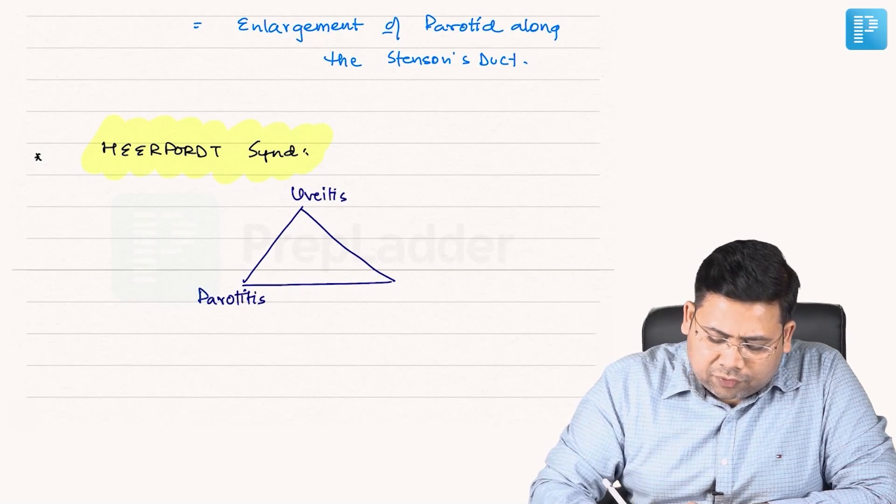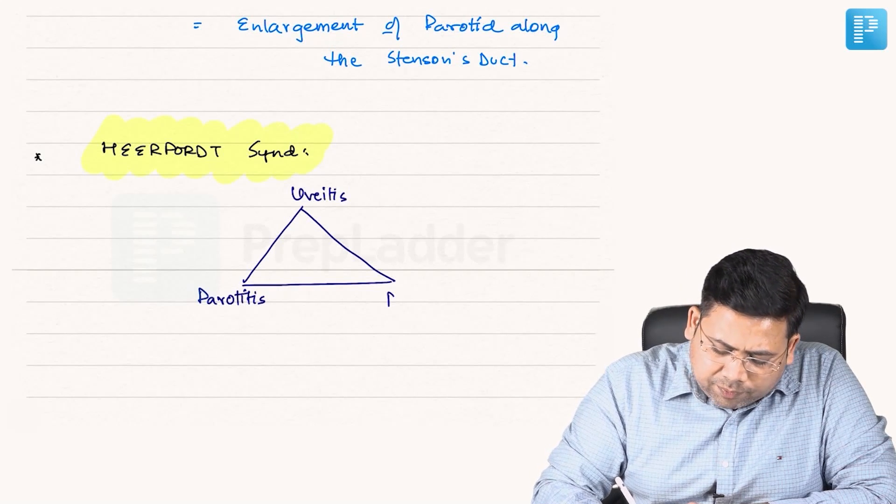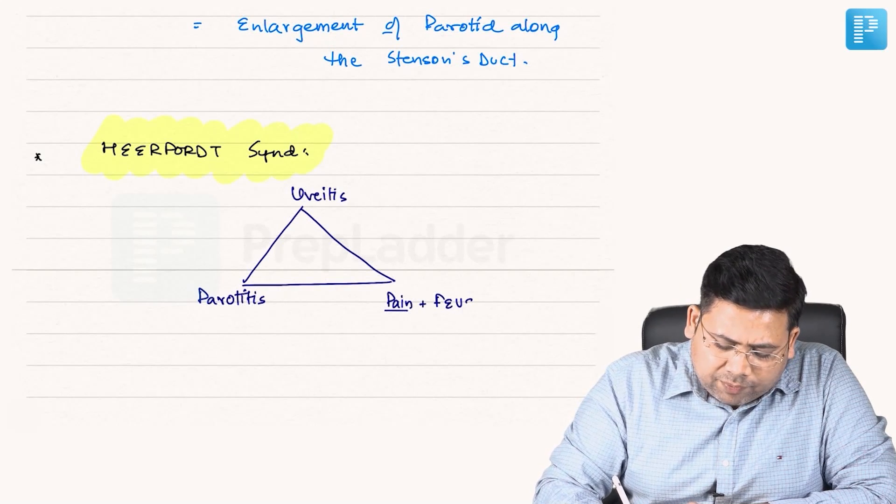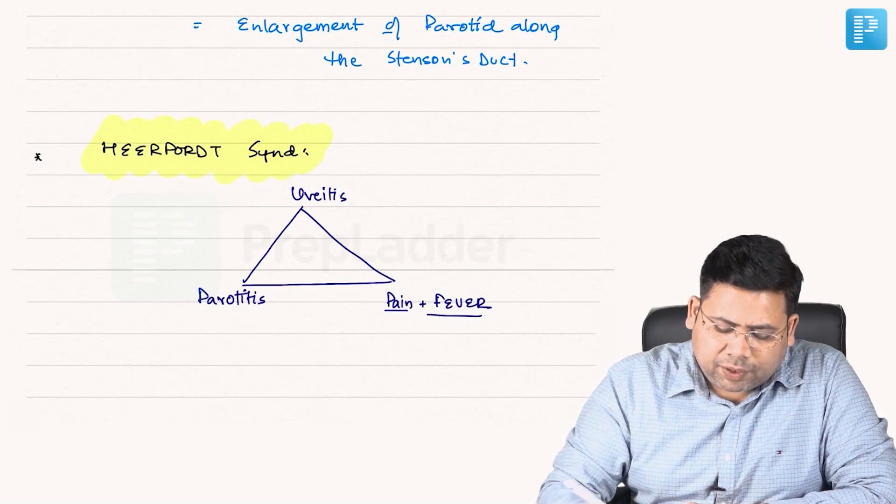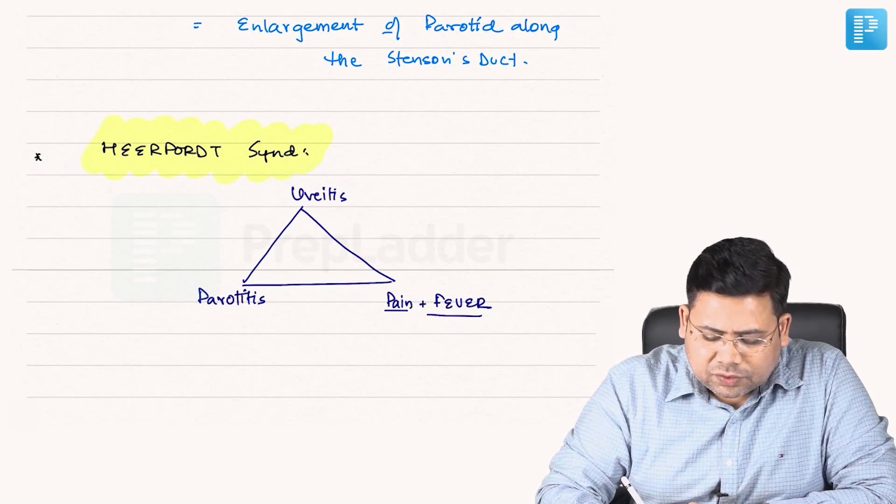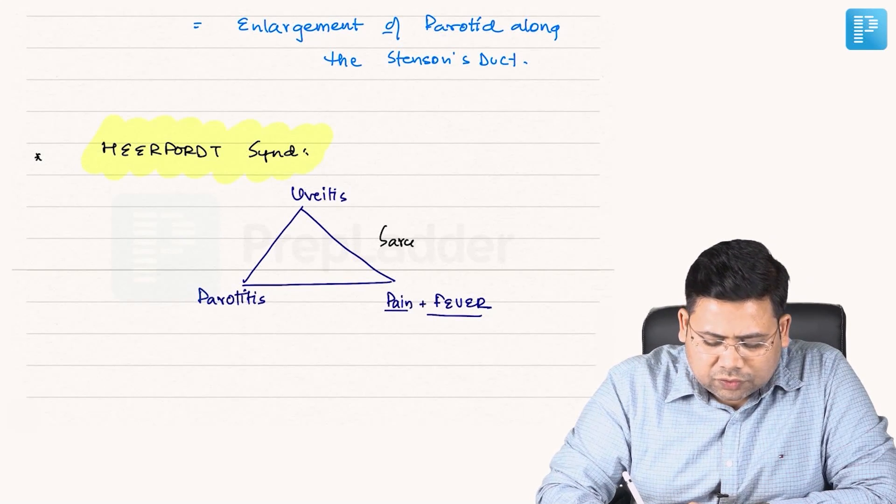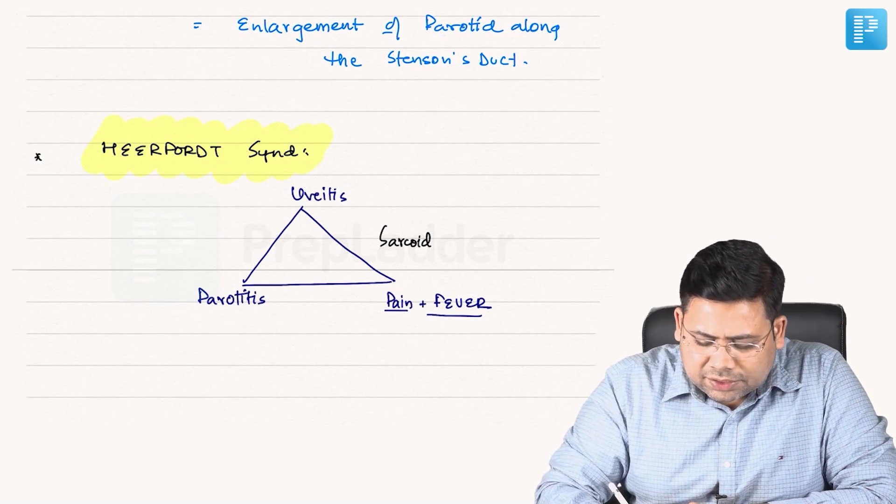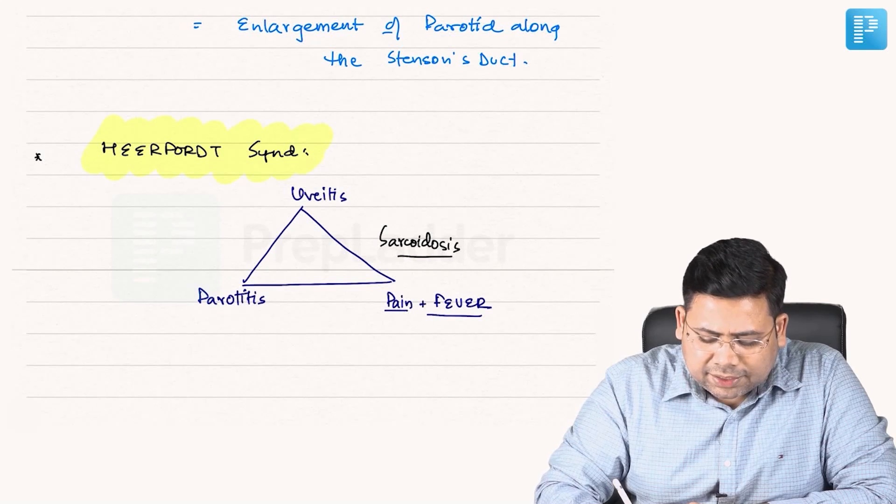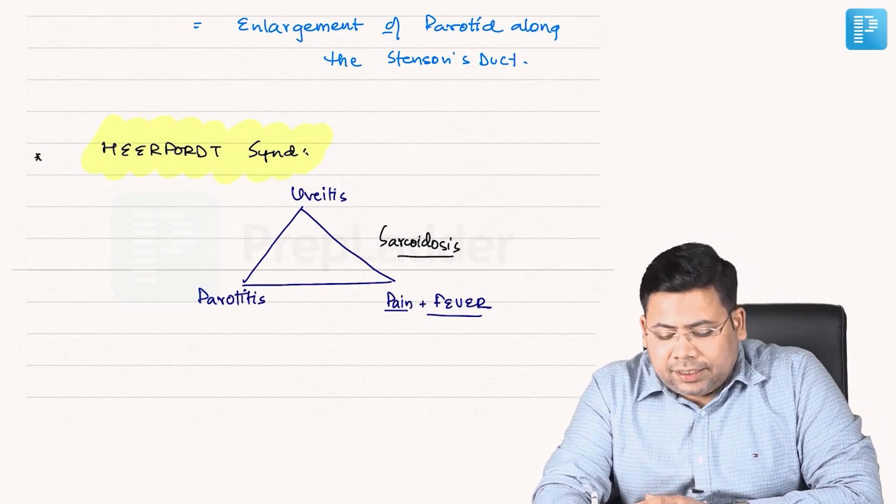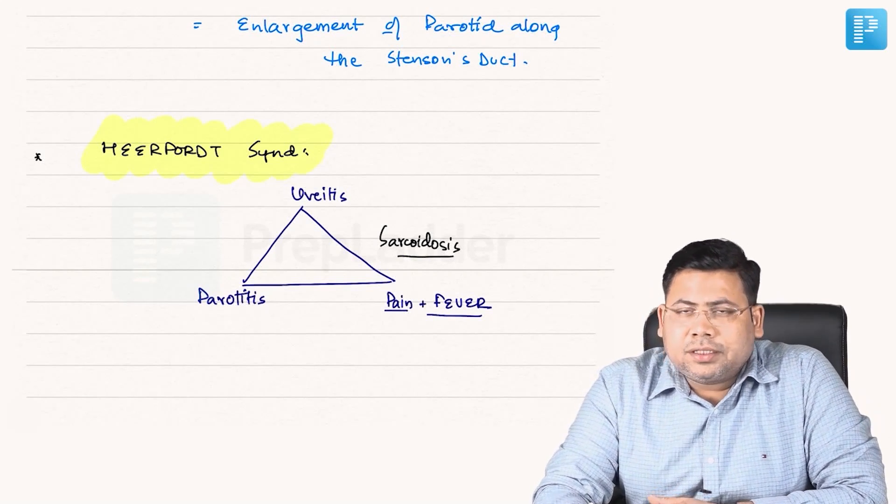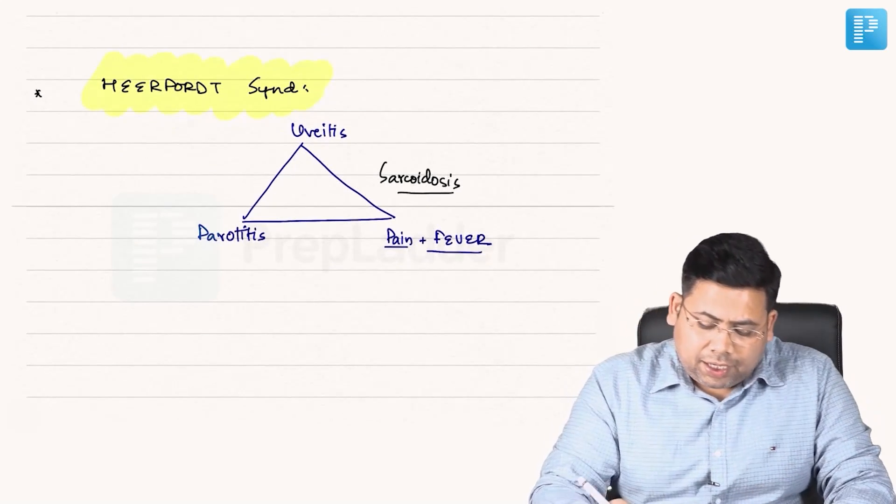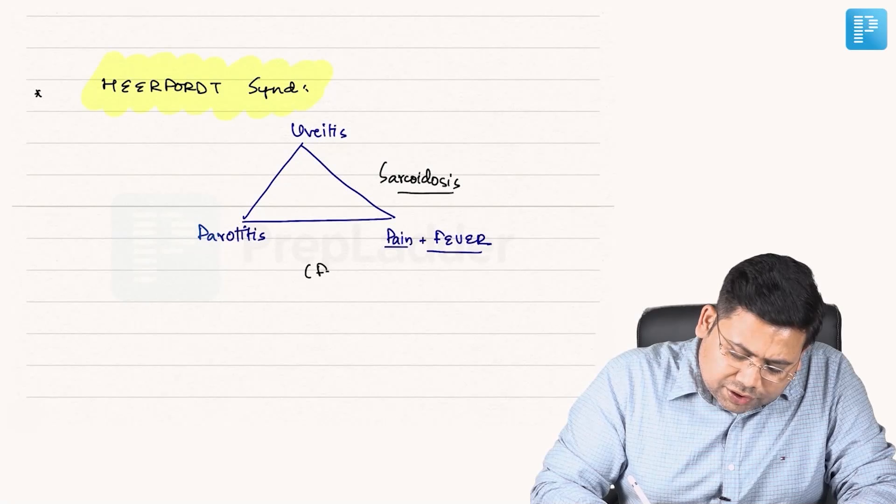Parotitis along with that you get to see pain plus fever. So pain plus fever, uveitis, and parotitis - this is seen in cases of sarcoidosis. Sarcoidosis along with this uveitis, parotitis, pain, and fever, these are the classical features which are associated with this.